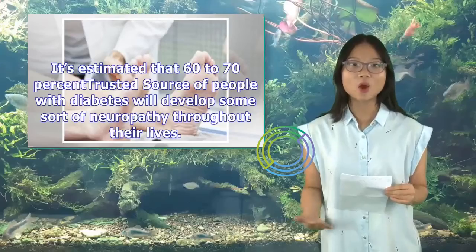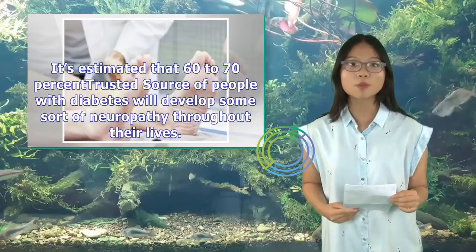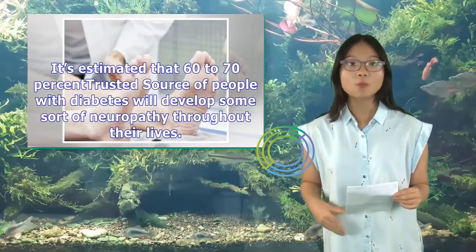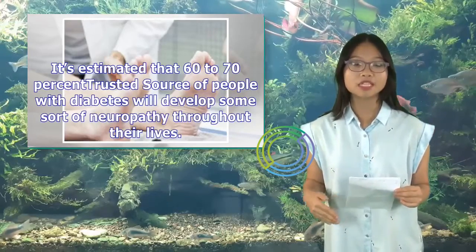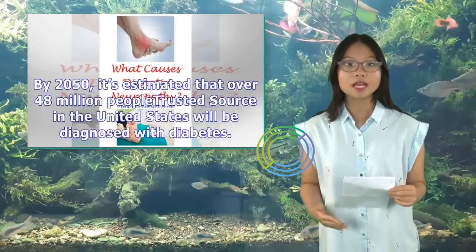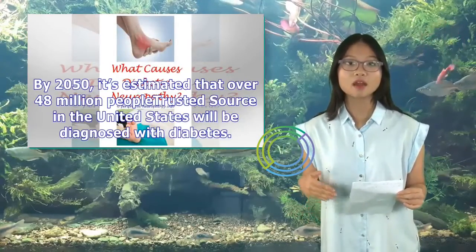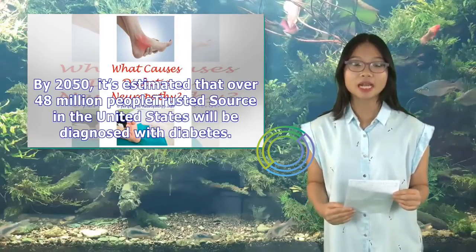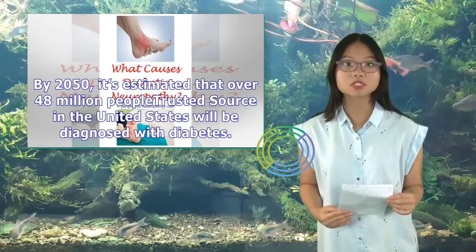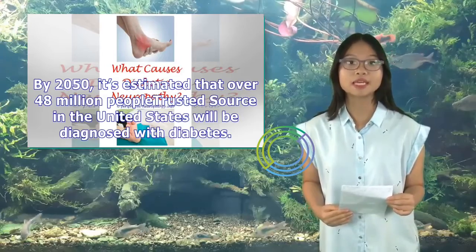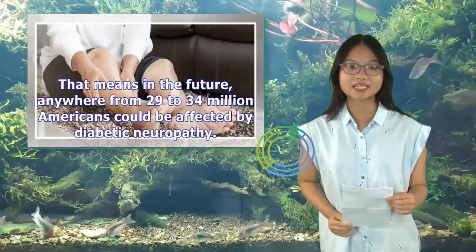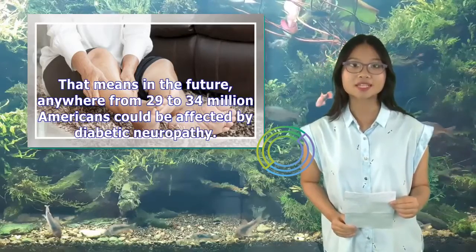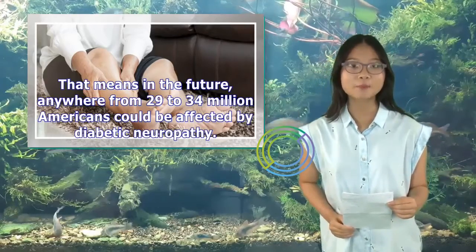It's estimated that 60–70% of people with diabetes will develop some sort of neuropathy throughout their lives. By 2050, it's estimated that over 48 million people in the United States will be diagnosed with diabetes. That means anywhere from 29 to 34 million Americans could be affected by diabetic neuropathy.